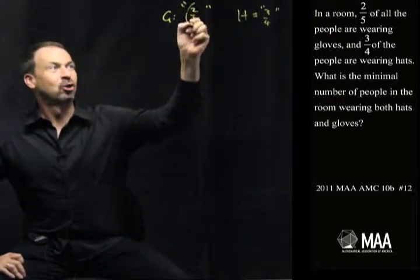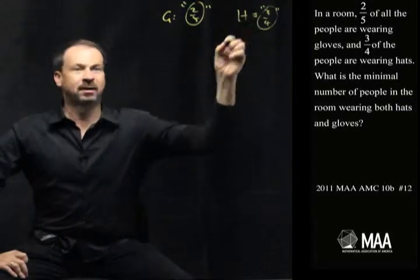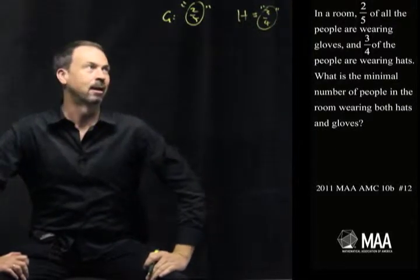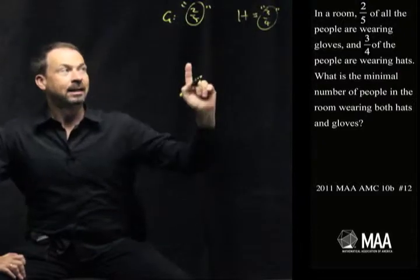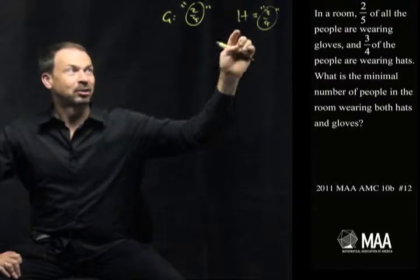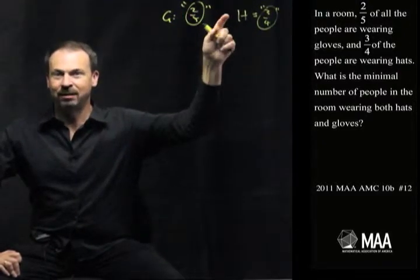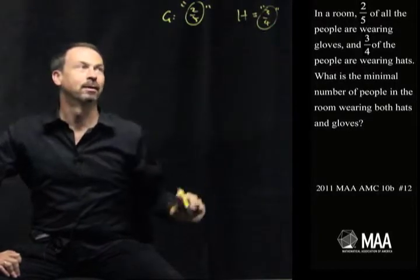First of all, I've got two-fifths of the people and three-quarters of the people in the room, people wearing gloves and or hats. So I guess the number of people in the room have to be such that whatever that number is, two-fifths is a whole number and three-quarters of it is also a whole number.